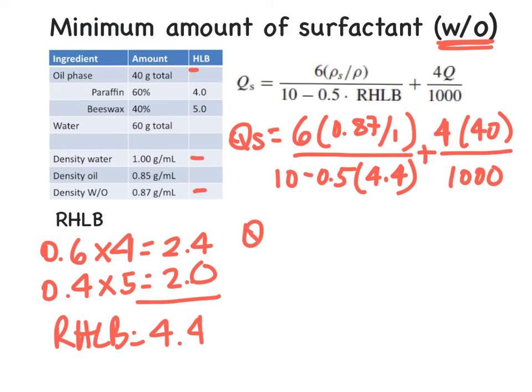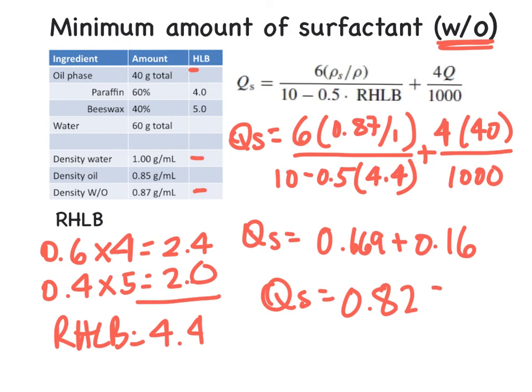So that's going to get us QS equal to 0.669, plus 0.16. So QS will equal 0.829 grams. That would be the minimum amount, so that would likely be rounded up to 1 gram in practice. So that ends the series of calculations involving the use of surfactants in emulsions.